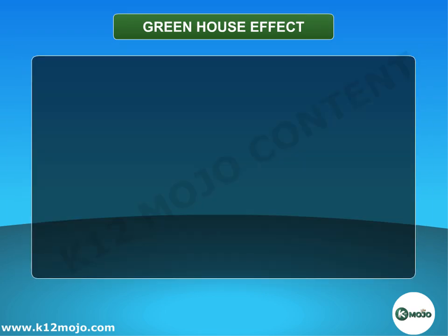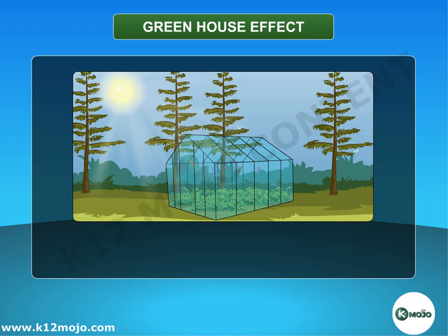Greenhouse effect. A greenhouse is a house made of glass — it has glass walls and a glass roof. A greenhouse stays warm inside even during the winter. Sunlight shines in and warms the plants and air inside, but the heat is trapped by the glass and can't escape. So during the daylight hours it gets warmer and warmer inside a greenhouse, and stays pretty warm at night too.